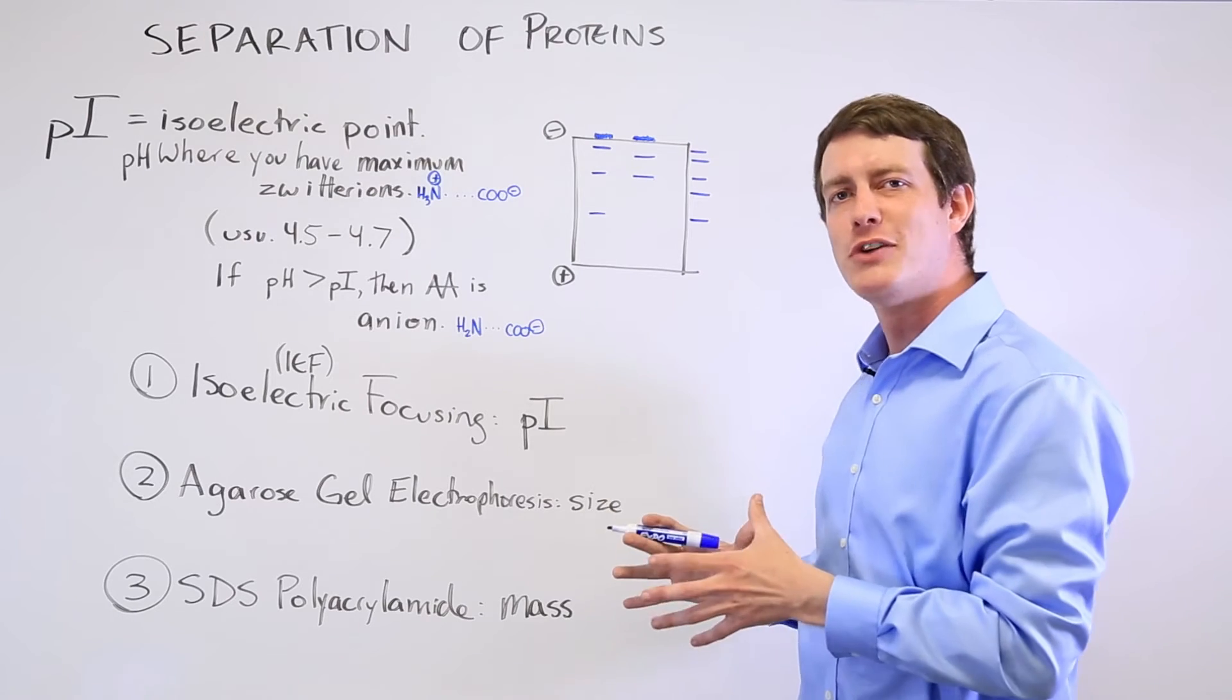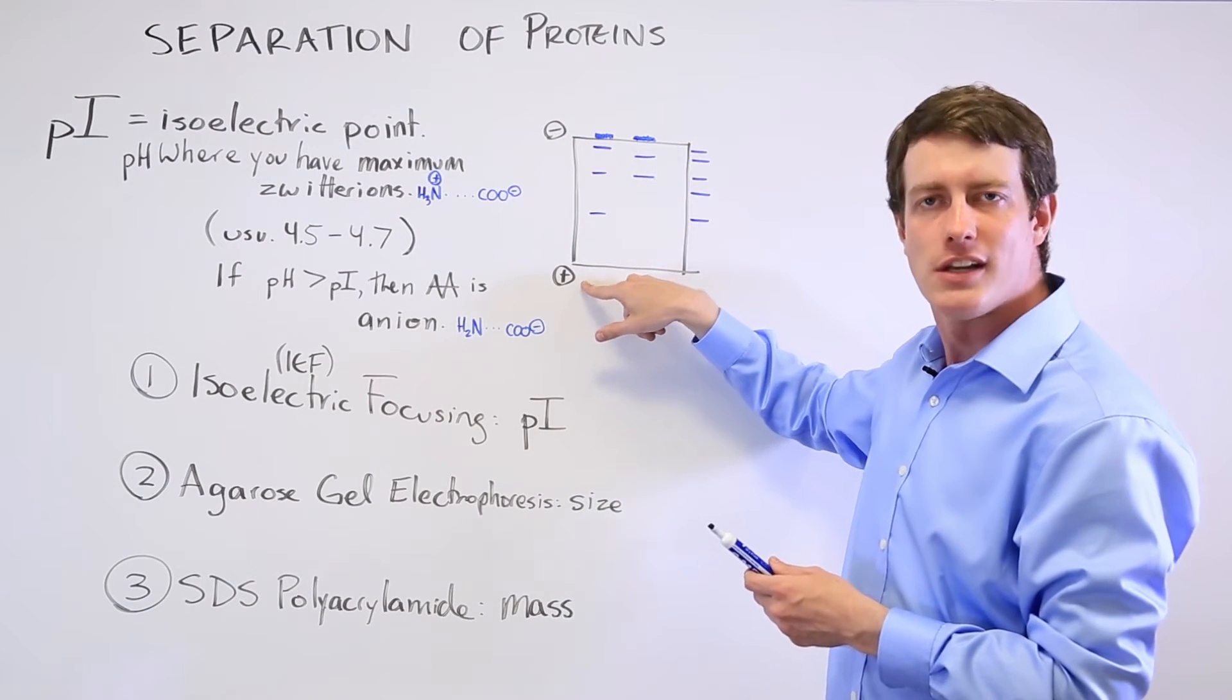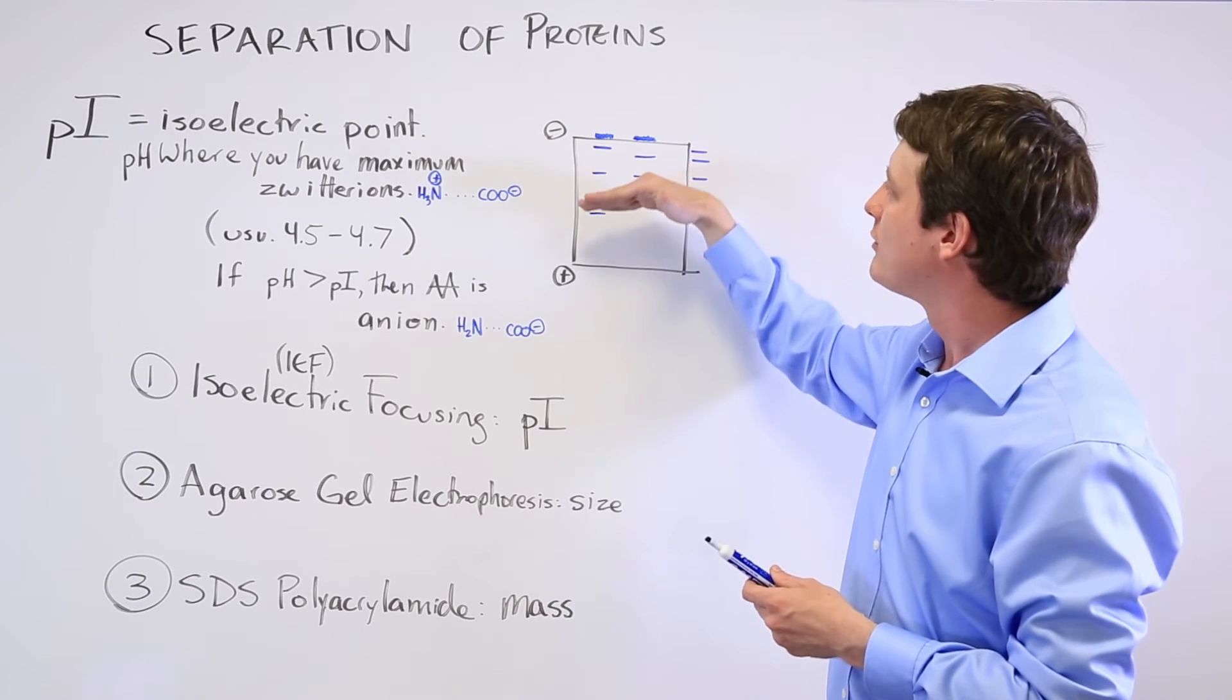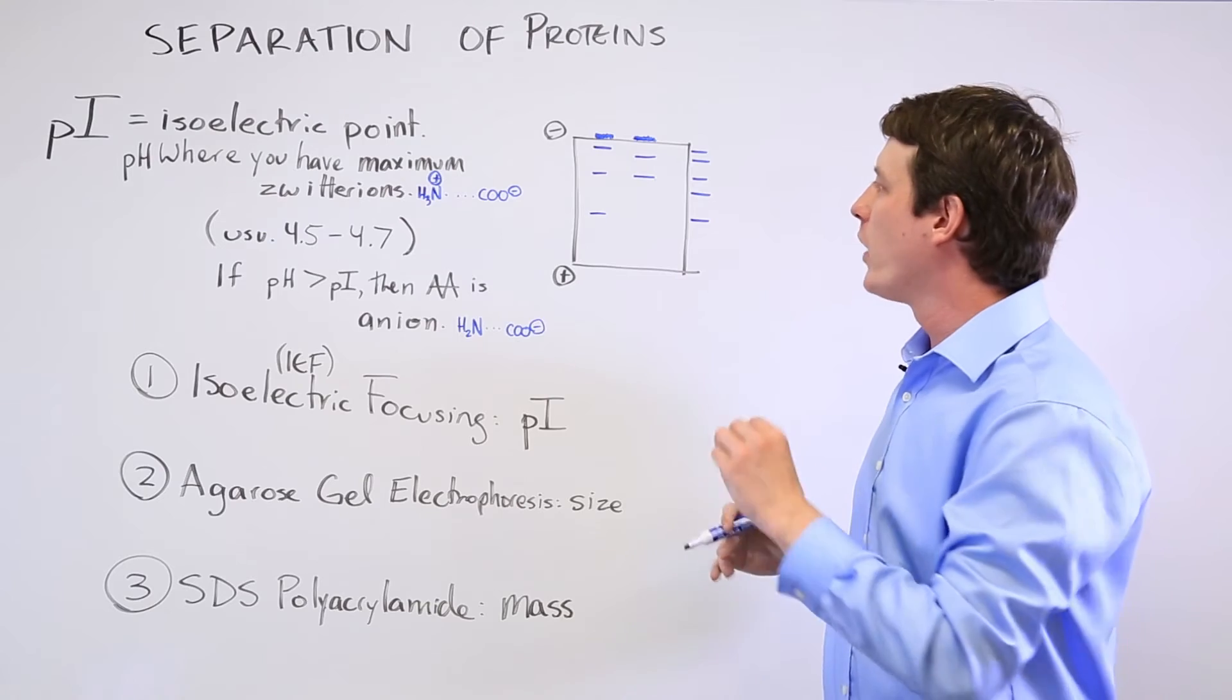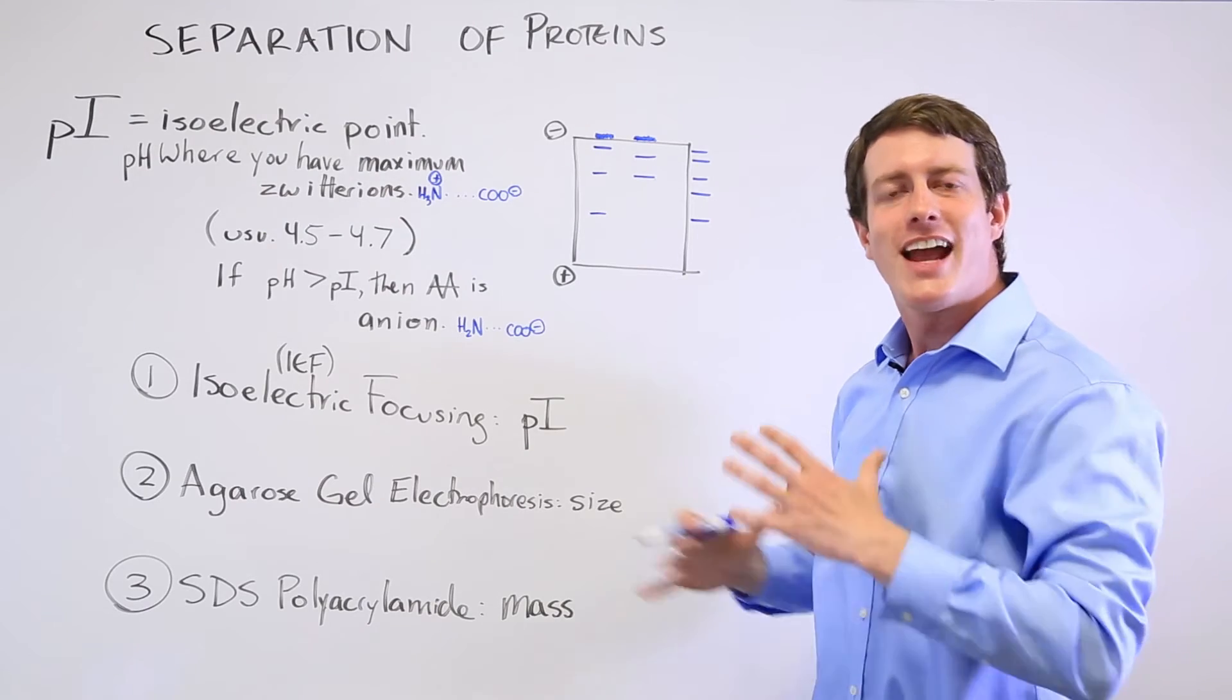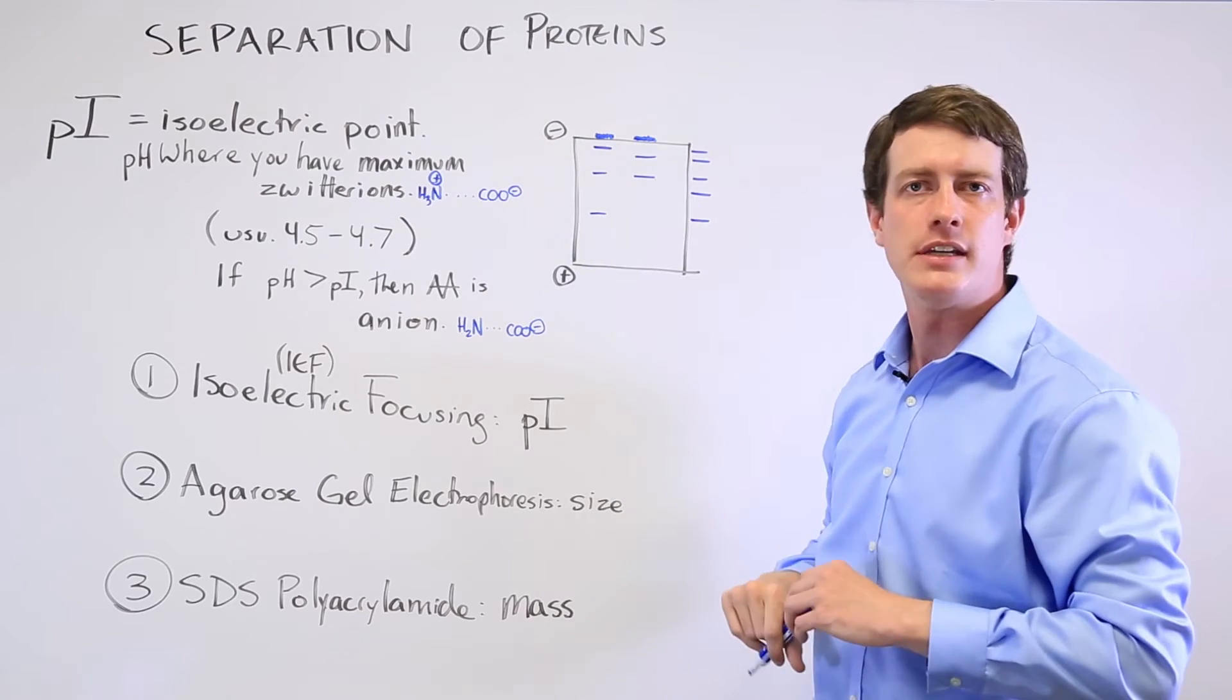So isoelectric focusing. You set up a negative charge on this side, a positive charge here, and you run it through this electric field until it reaches the pH where it becomes a zwitterion and stops being attracted to this side and repelled from the negative side.